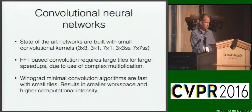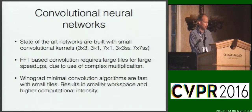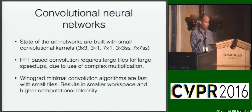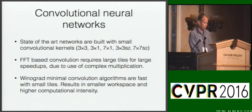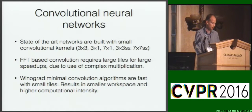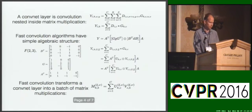So why is FFT not fast enough? State-of-the-art networks use small convolutional kernels, namely 3x3 kernels as well as 3x1 or 7x1 kernels. They also use 3x3 stride 2 or 7x7 stride 2 kernels, which we know can be computed as a sum of smaller unstrided kernels by decimation. However, FFT-based convolution requires large tile sizes in order to achieve large reductions in arithmetic complexity. Winograd's minimal filtering algorithms compute small convolutions with fewer multiplications, less transform overhead, higher computational intensity, and less workspace memory.